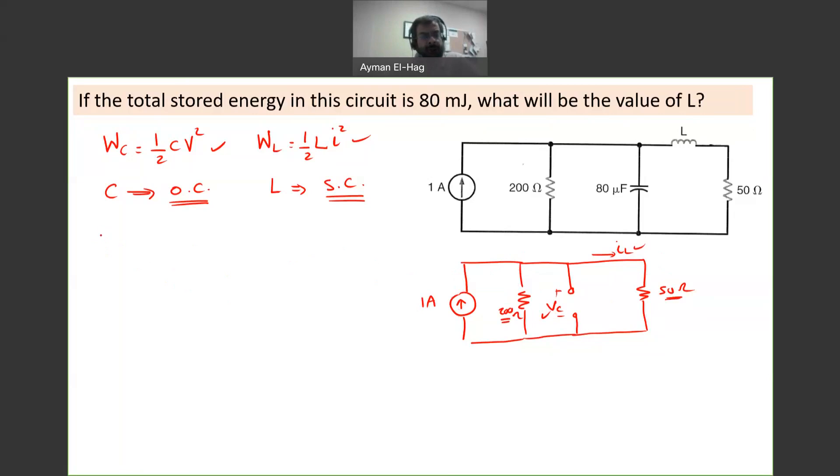This current will be divided between the two resistors. So your IL is equal to the main current which is one amp times the other resistance which is 200, divided by 200 plus 50. You will notice this in these types of questions because the inductor changes to a short circuit and capacitor changes to open circuit, usually the circuit becomes simpler, much easier to analyze.